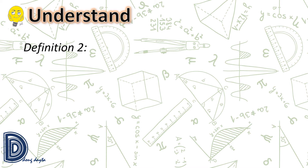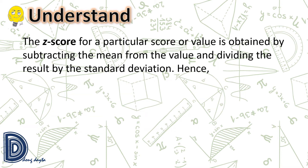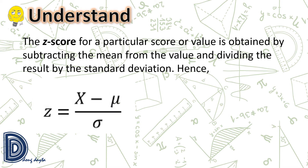Let us have the standard score or the z-score. The z-score is the equivalent value of a raw score in terms of the mean and standard deviation in a distribution. It tells how many standard deviations a particular score is above or below the mean. The z-score is obtained by subtracting the mean from the value and dividing the result by the standard deviation. Hence, z is equal to x minus mu over sigma.